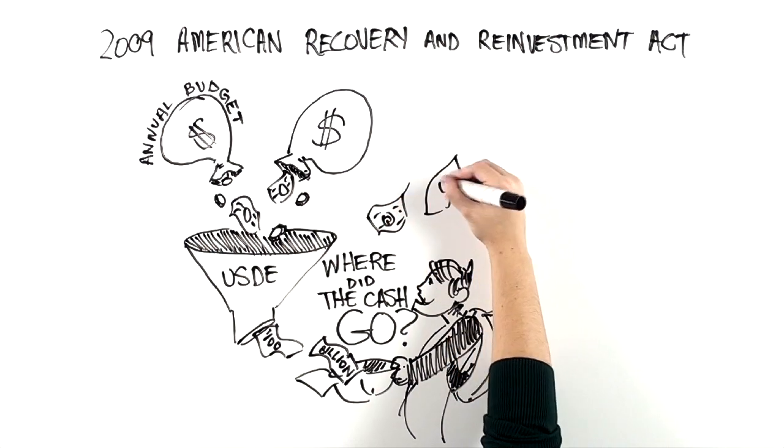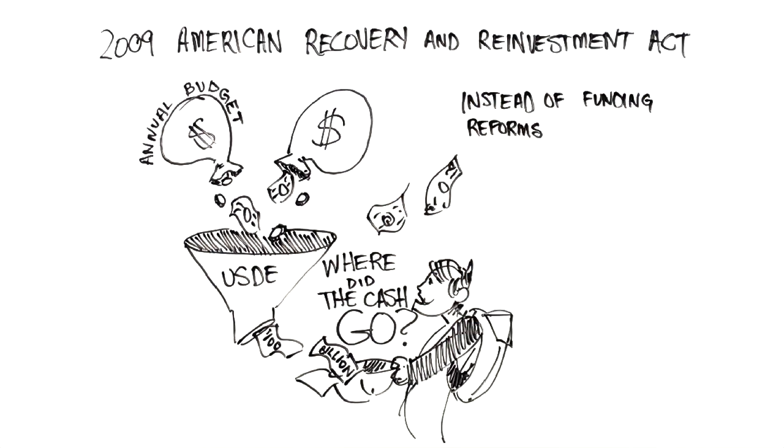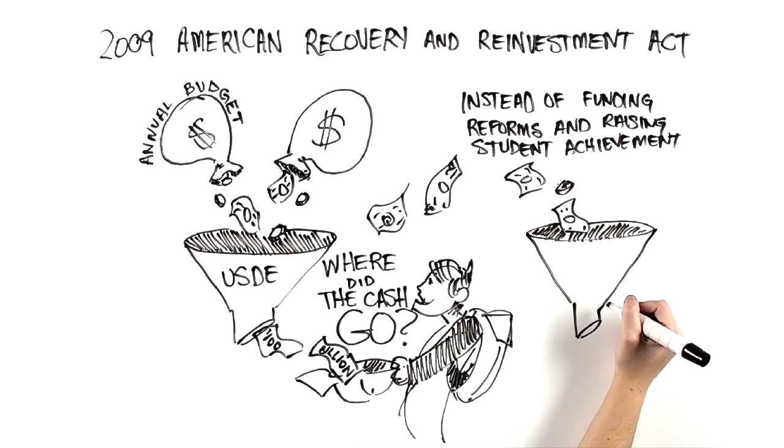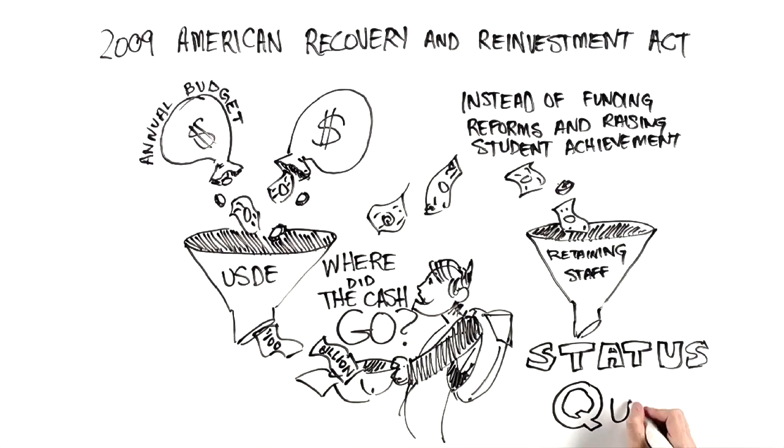The U.S. Government Accountability Office found that instead of funding reforms and raising student achievement, the education stimulus money simply went to retaining staff and current education programs, i.e., preserving the status quo.